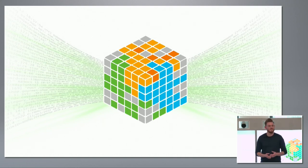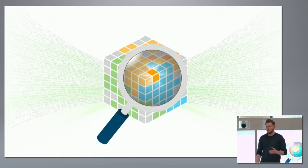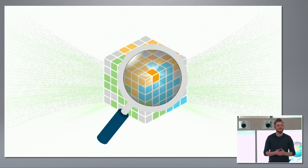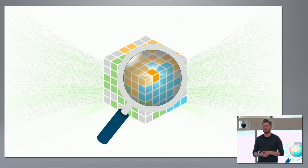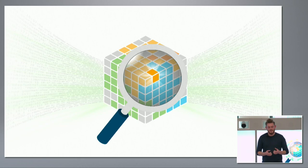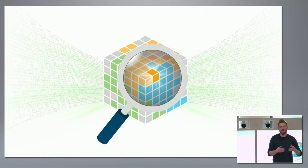We let computers solve that problem. They're really good at looking for patterns, identifying those patterns, and visualizing them. Tetration looks at every single endpoint and calculates a profile — what behavior it exhibits, what application it's running, what ports it listens on, who it speaks to, what time of day, what type of packets it sends. All of that generates a profile, and we run those profiles through machine learning algorithms to generate groups of endpoints with similar behavior.